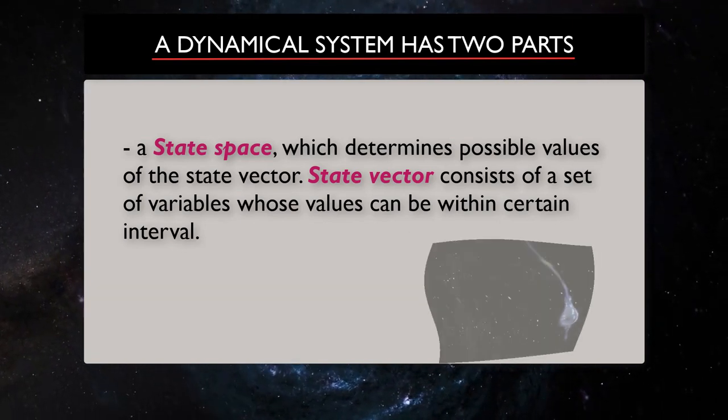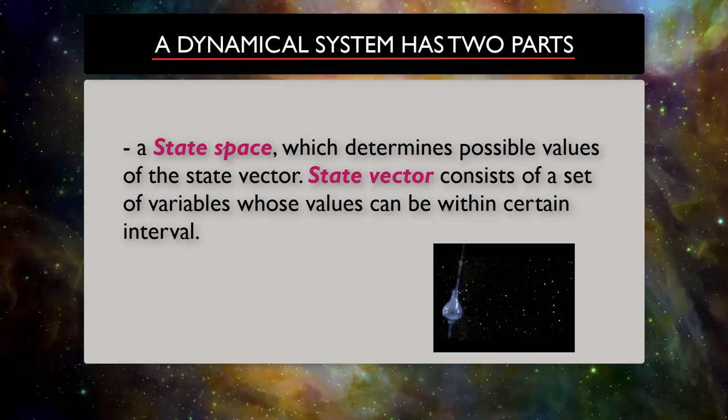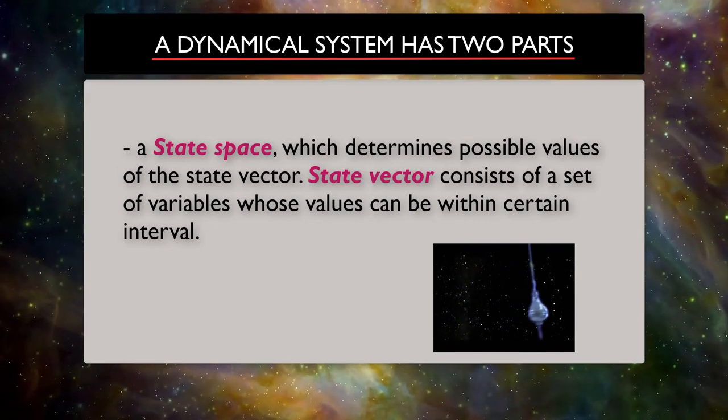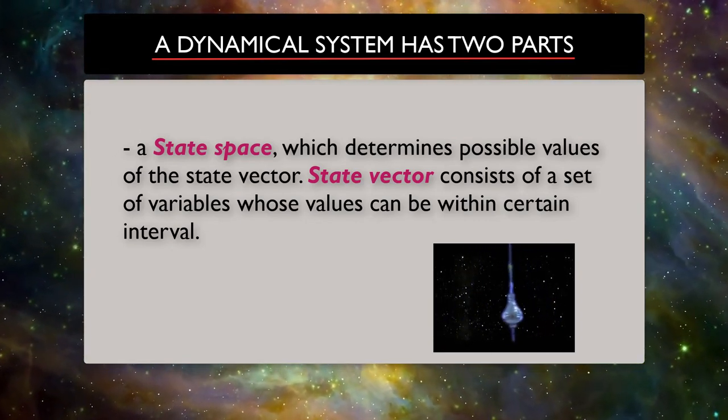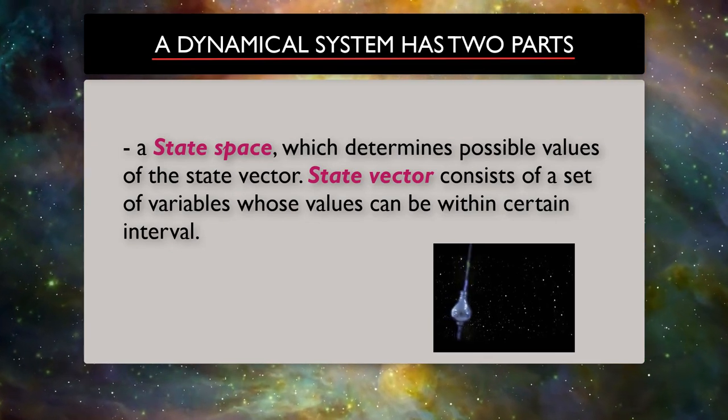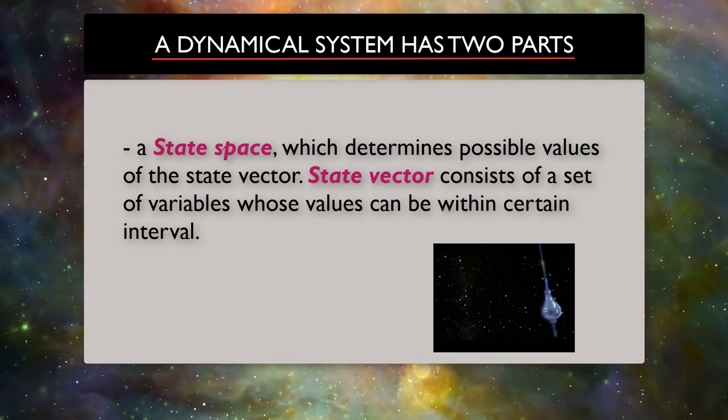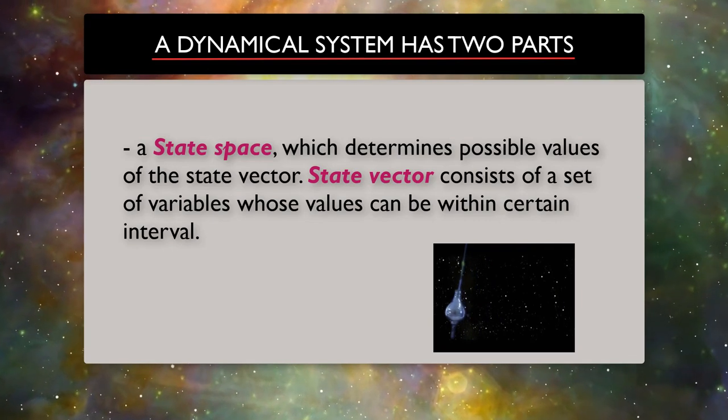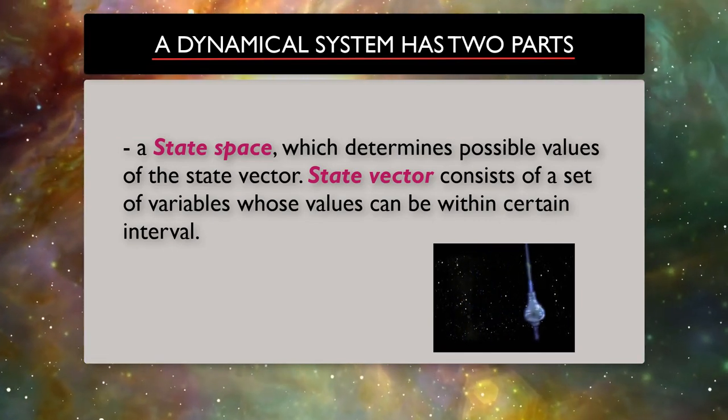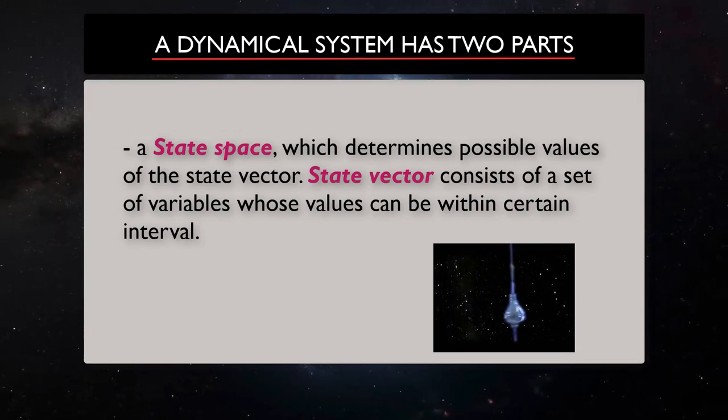For example, let's think about an idealized pendulum. The state of an idealized pendulum is uniquely defined by its angle and angular velocity. The state space is the set of all possible pairs of angle and velocity which form the cylinder.